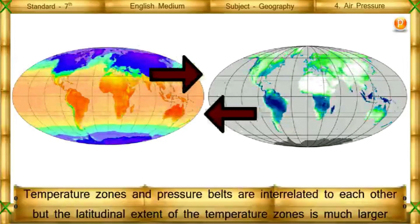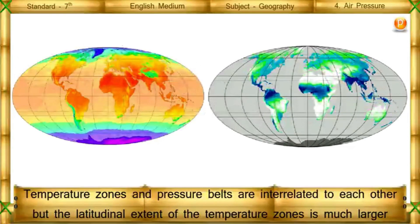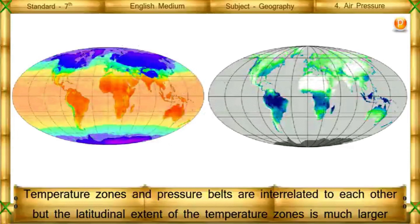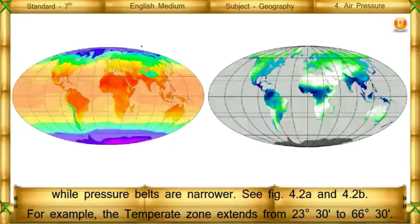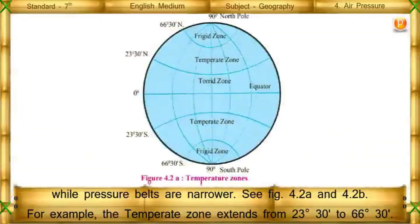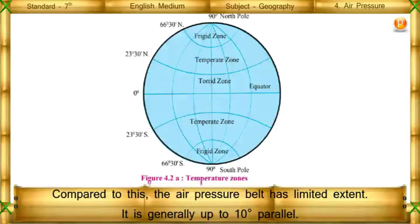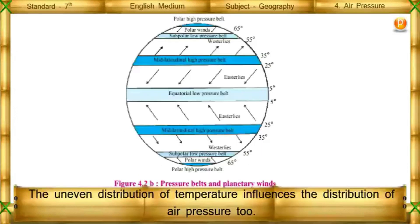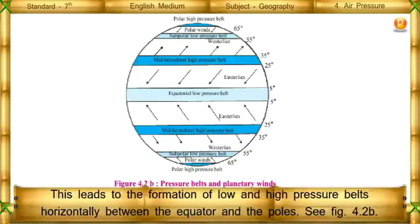Temperature zones and pressure belts are interrelated to each other. However, the latitudinal extent of the temperature zones is much larger while pressure belts are narrower. See figures 4.2a and 4.2b. For example, the temperature zone extends from 23 degrees 30 minutes to 66 degrees 30 minutes, whereas the air pressure belt has limited extent, generally up to 10 degrees parallel. The uneven distribution of temperature influences the distribution of air pressure, leading to the formation of low and high pressure belts horizontally between the equator and the poles.